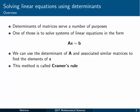One of them is to allow us to solve systems of linear equations of the form Ax equals b that we've seen earlier. Now we can use the determinant of the matrix A and some associated similar matrices to find the elements of the solution vector x. Doing this is what we call Cramer's Rule.